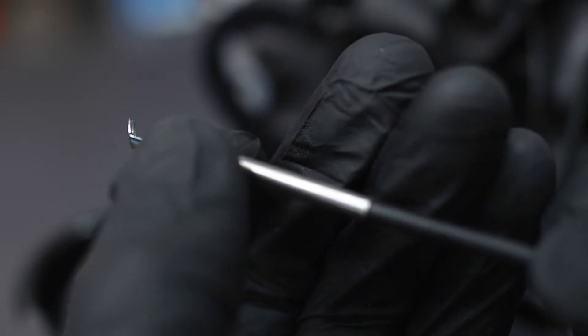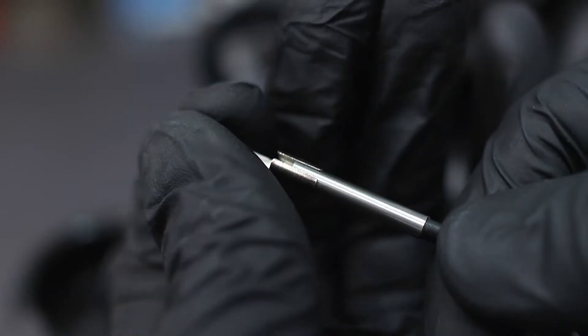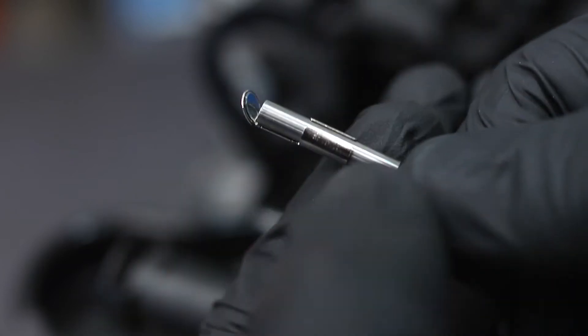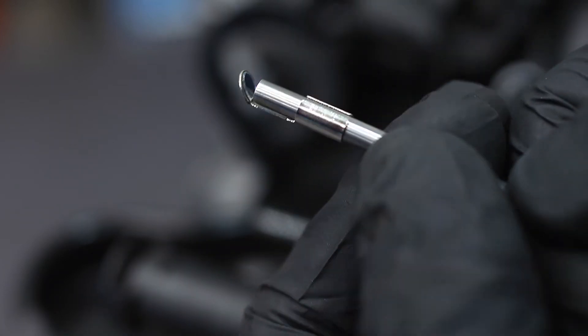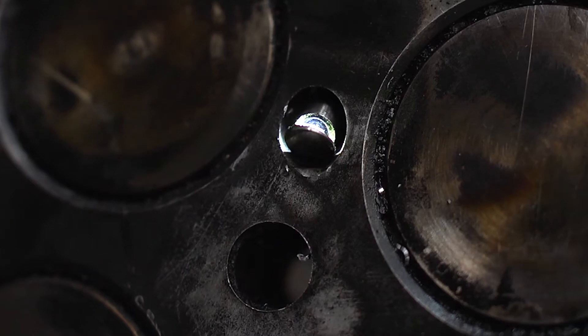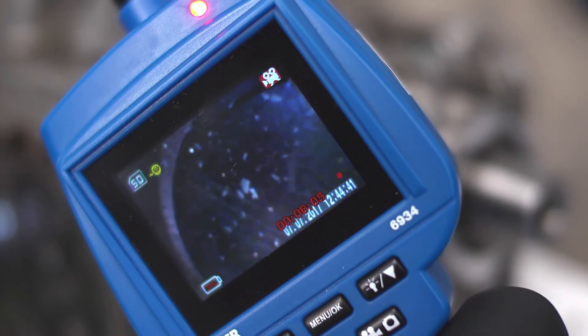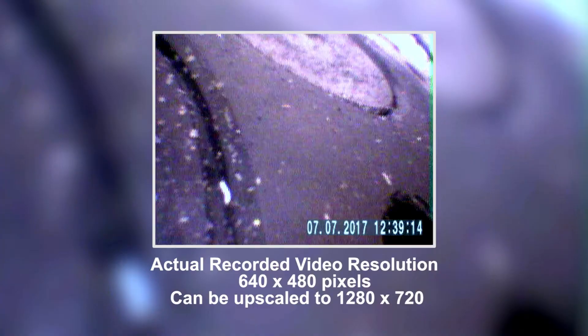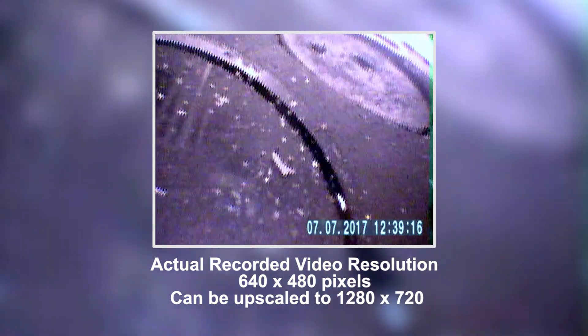A useful accessory is the 90 degree mirror attachment which simply clips over the end of the probe. This will let us look up at the top of the combustion chamber and cylinder head, and let us inspect the inlet and exhaust valves. As the probe is turned we can see the two valves to each side of the glow plug aperture.